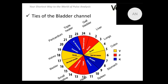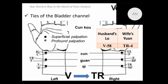In Ayurvedic traditions, the bladder channel is a vata channel — along with the kidney, lungs, and large intestine channels. These four channels belong to the vata category and are responsible for vata dosha in the body. According to pulse diagnosis rules, the bladder channel is the main channel in the pair with the triple heater channel, and it can bring energy from luo point 58 to point 4 of the triple heater channel — the yuan point of that channel.